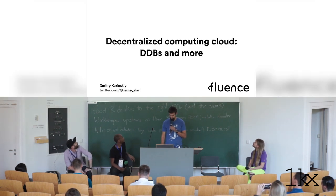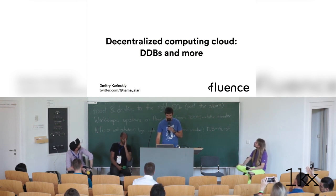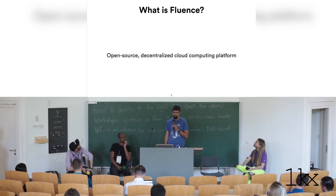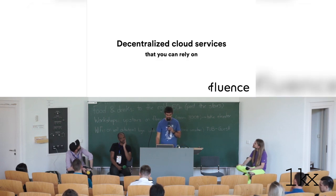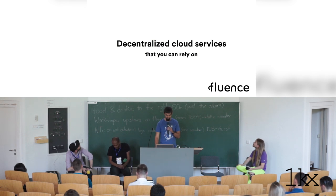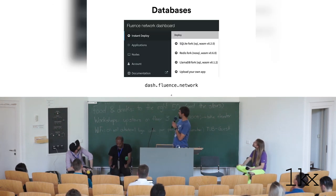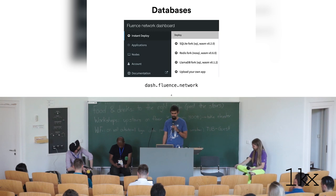I'm Dimitri from Fluence — I do engineering at Fluence Labs. Fluence in general is an open source decentralized cloud computing platform, and it has databases as an essential part of the cloud. On the decentralized databases panel, the most important thing is that we have SQLite, a fork of Redis, and another SQL database named LlamaDB available in a single click.